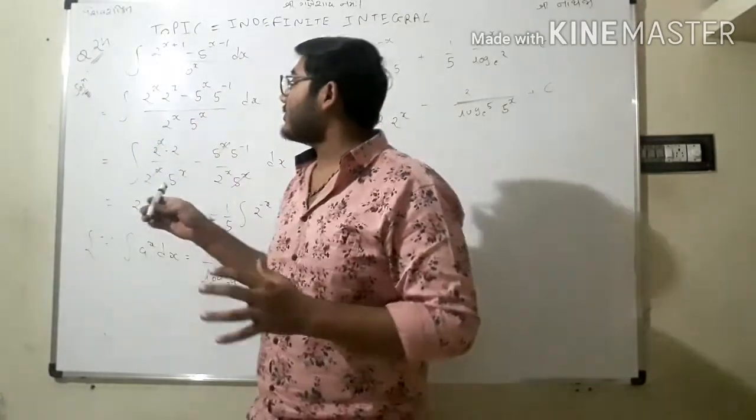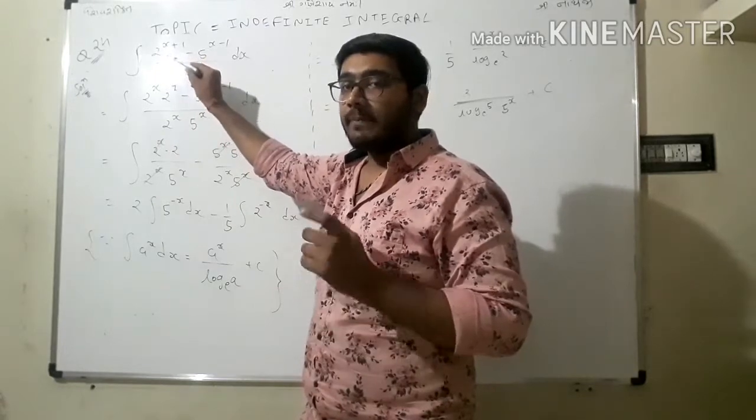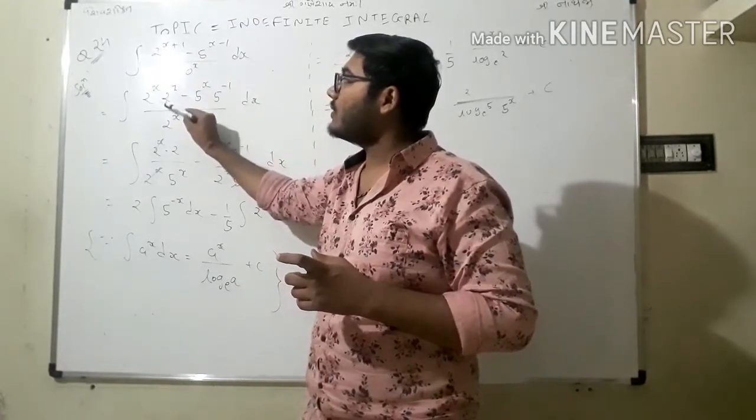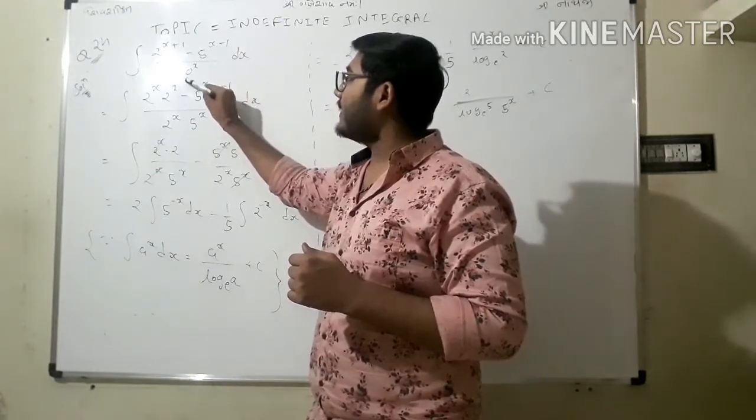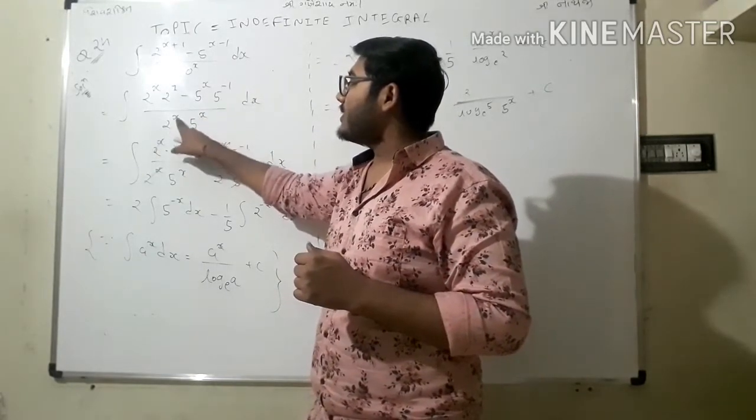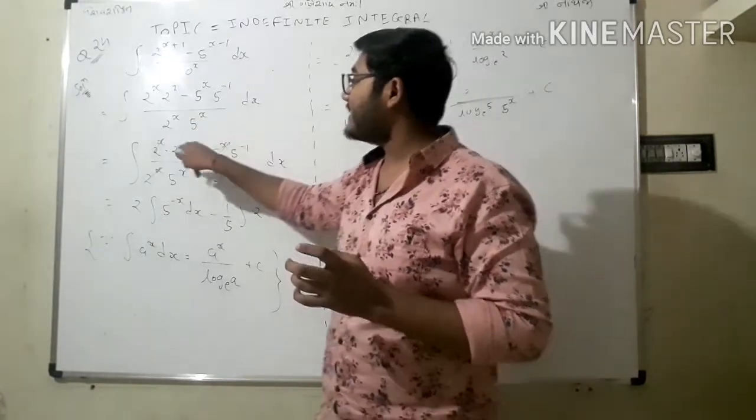Okay, now what we have to do in here? So easy question. Integration 2 raised to x plus 1, I split out that power into 2 raised to x into 2 raised to 1. 5 raised to x minus 1 so 5 raised to x, 5 raised to minus 1.